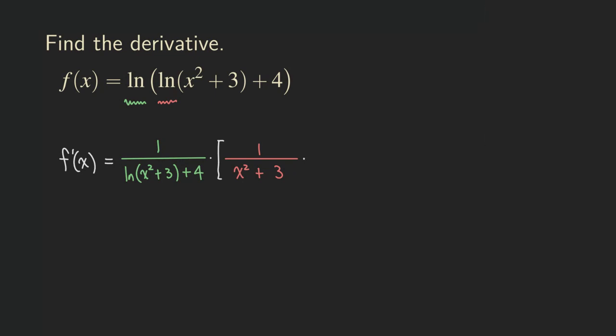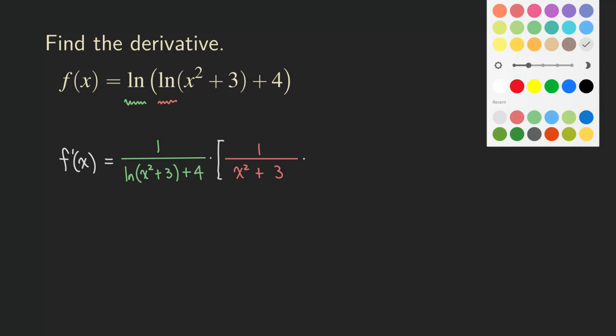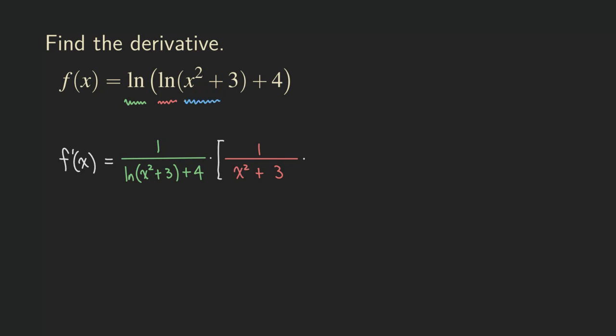We would need to now multiply by the derivative of the inner function, which is the derivative of the x squared plus 3. So let me highlight that one, x squared plus 3. So what is that? That's going to be just 2x. And in fact, because there was only one term right here, we do not really need this pair of brackets, but we put it there anyway. So it doesn't really matter. So just leave it for now.